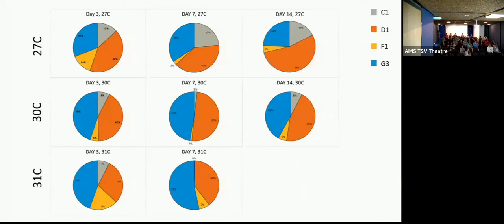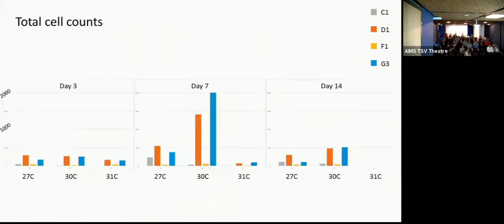And then when you get to day 14, we had total mortality at 31, but you can still see that Ds and Gs are the ones that are there the most. And why this is particularly interesting is because G and D are both more thermally tolerant than C. However, we don't really find G in adults. And so we're not sure exactly if that can be a long-term symbiosis or what that might mean downstream.